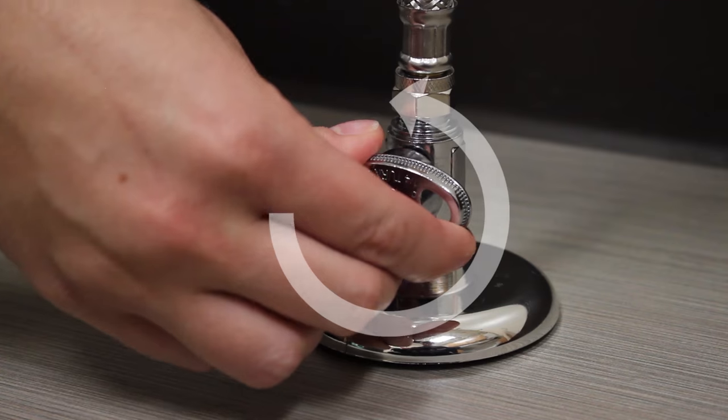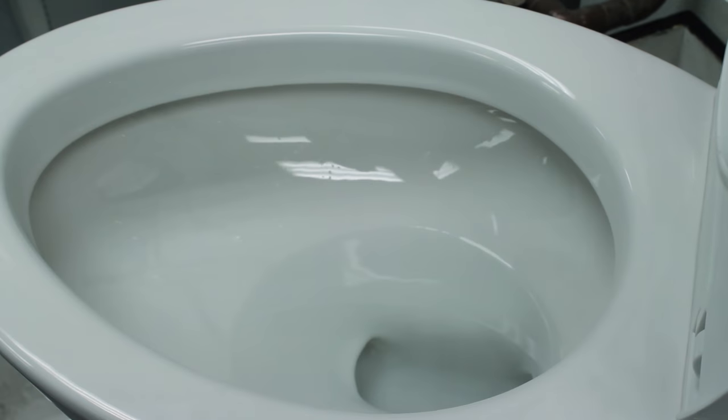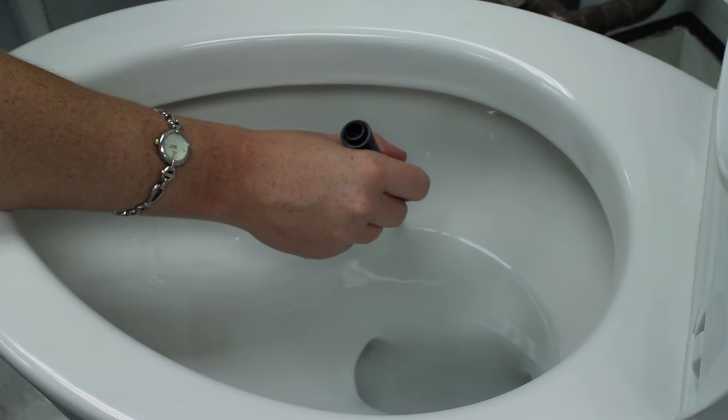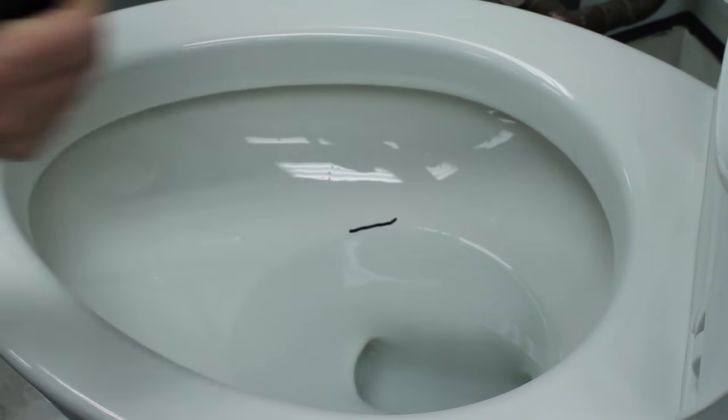Reattach the water supply line and turn the water supply on. Wait two minutes for the water in the bowl to settle. Mark the water level in the bowl with a pencil or dry erase marker, then flush.